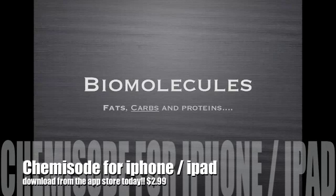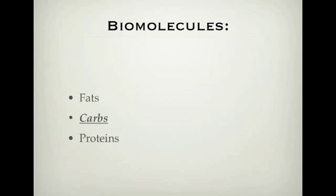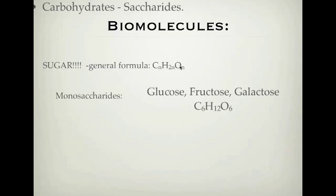Welcome to the Chemisode on biomolecules about carbohydrates. This is the one and only carbohydrates video I'm going to do, because it's a relatively small section. The first thing you need to know is that carbohydrates are also commonly known as C_n H_{2n} O_n, so they have twice as much hydrogen as they have carbon and oxygen. This is the general formula for carbohydrates or sugars.